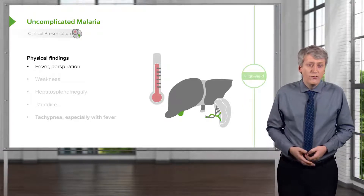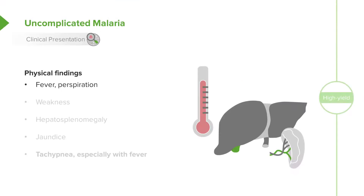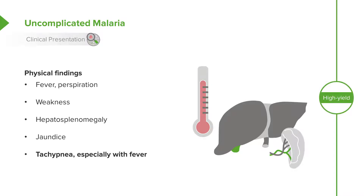The physical findings can include fever and perspiration, as we've discussed, but patients may also have weakness. They often have hepatosplenomegaly, they may have jaundice from the increased red blood cell breakdown, and they may have tachypnea. Children tend to get tachypnea often with fever — it's sort of like an inflammatory response.